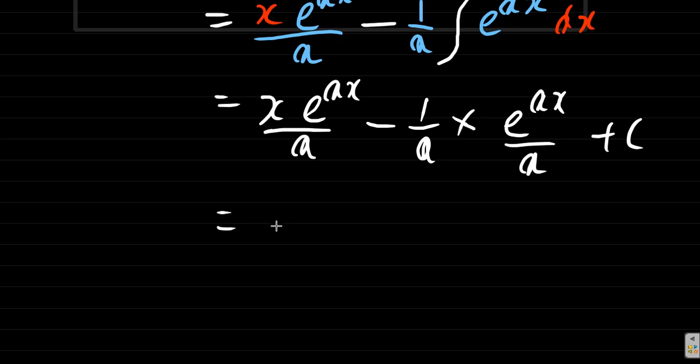You can put e to the ax outside the bracket. And by the way, before we put the bracket, let's look at what this would look like: x e to the ax over a minus this would be e to the ax over a squared. You see that, a times a.